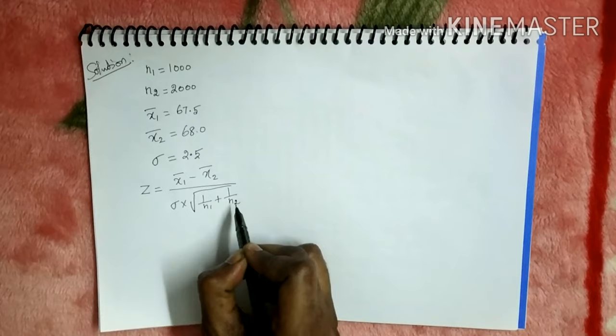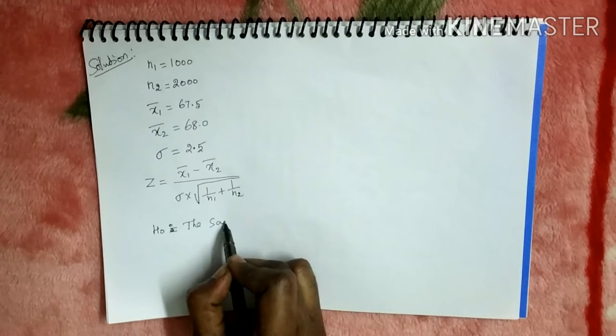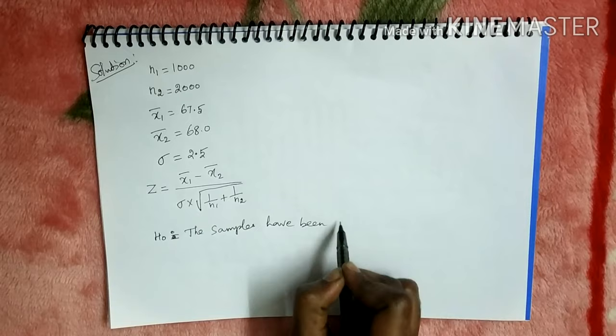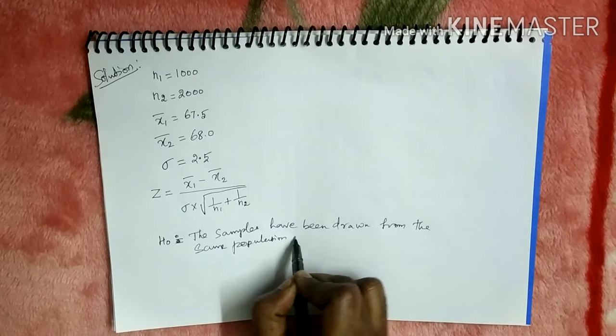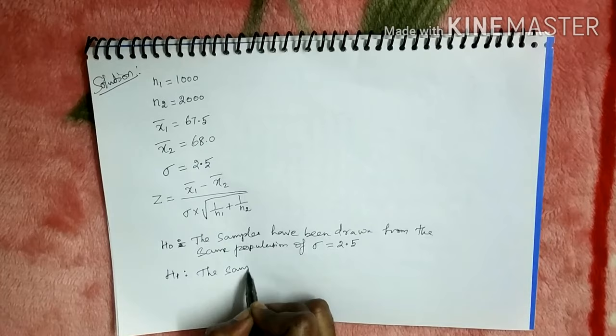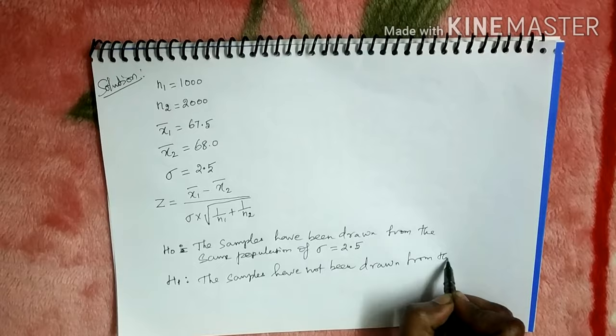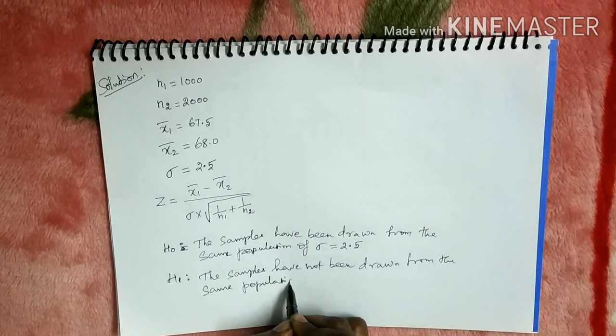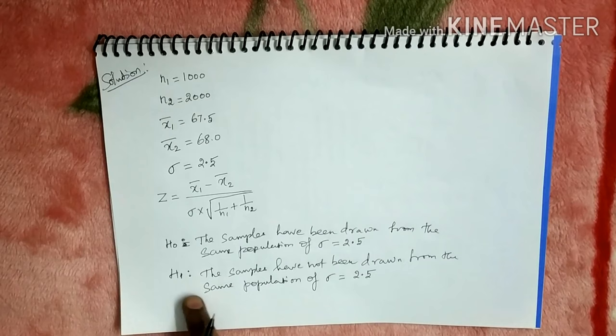Now we fix our null hypothesis: the two samples have been drawn from the same population of standard deviation 2.5 inches. The alternative hypothesis: the samples have not been drawn from the same population. At the end, we will know which claim is true.